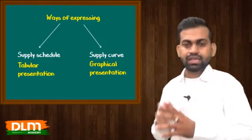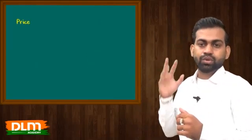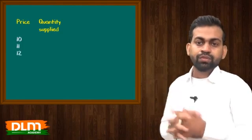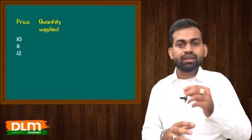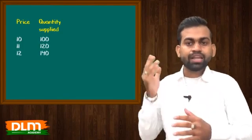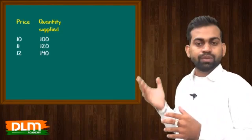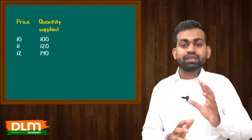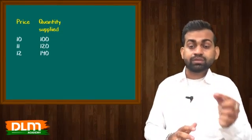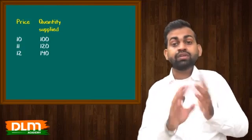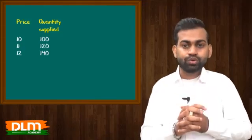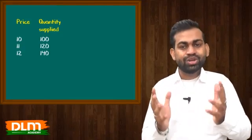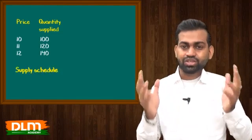Supply schedule mein: price hai aur quantity supplied hai. Price 10, 11, 12 — quantity supplied 100, 120, 140. Price badh raha hai, quantity supplied badh raha hai. This is price increment ke saath quantity supplied ke increment ko, yaani positive relationship ko, tabular way se present kiya hai.